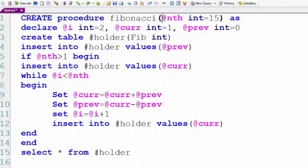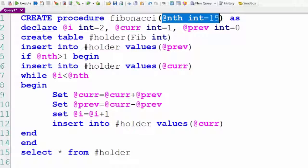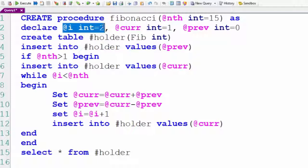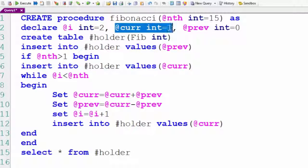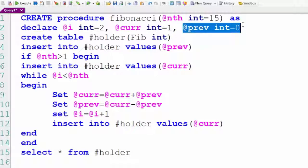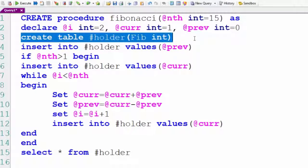We're going to put the default equal to fifteen, so if we don't put anything it's going to be fifteen. We'll declare @i as an integer with default equal to two. We're going to have @current equal to one and @previous equal to zero. We're going to create a table called holder. It's going to have Fib as the column, and it's going to be an integer.